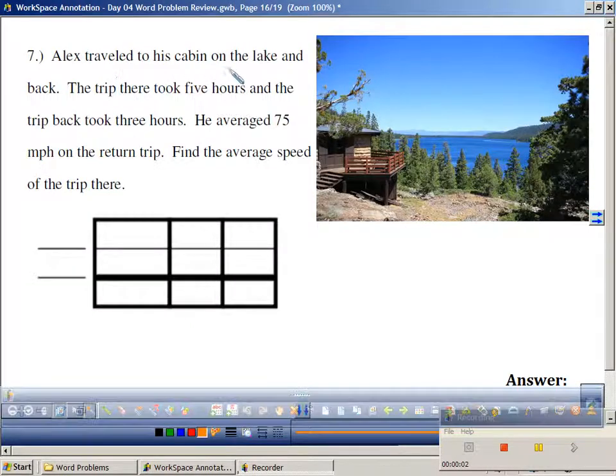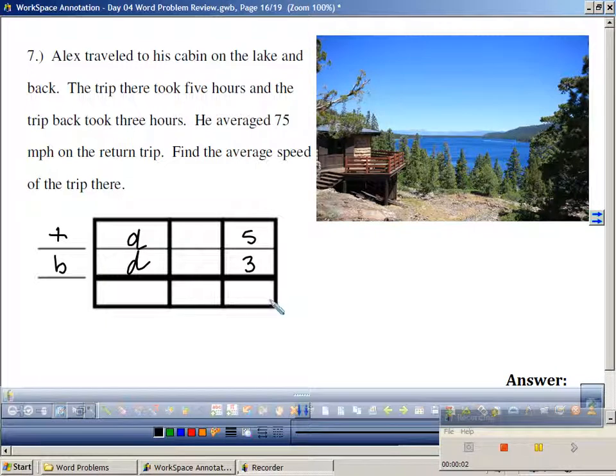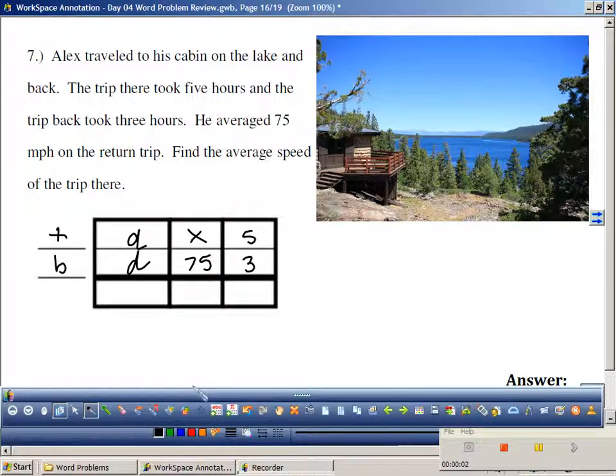Alex travels to his cabin on the lake and back. There and back. What kind of problem is this? Distance, distance. The trip there took 5 hours. The trip back took 3. He averaged 75 on the return. Find the average speed of the trip there. You guys can do that.